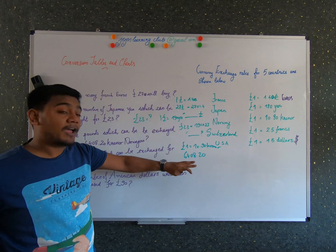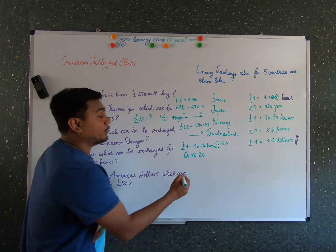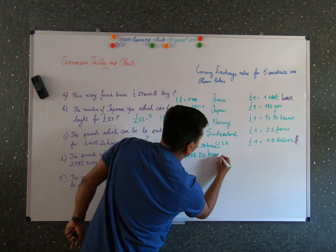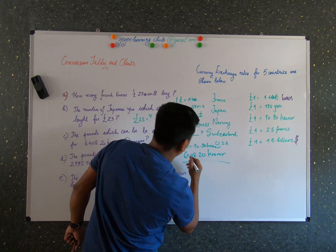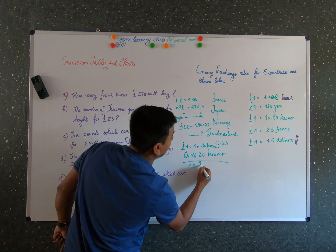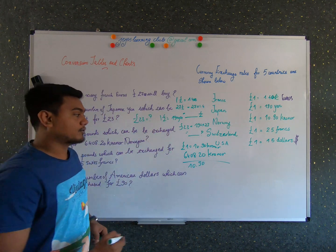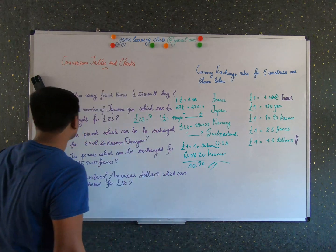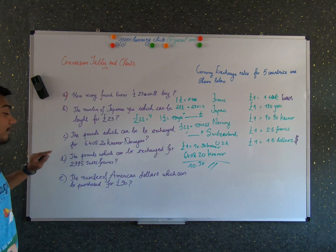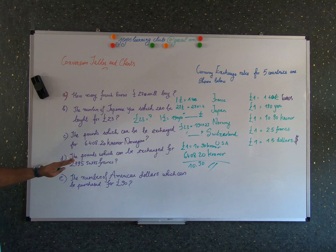Also the question is we have to find how many pounds are 6408.20 Krona. So to find how many pounds are it, we know that this many Krona is there. So to find the pounds what we have to do, we just have to divide it by 10.90. So we get the amount in terms of pounds.